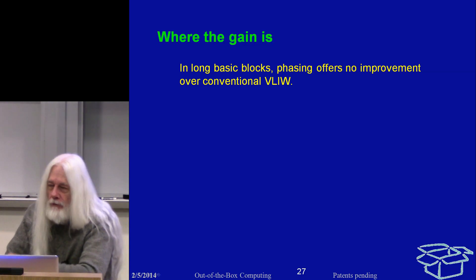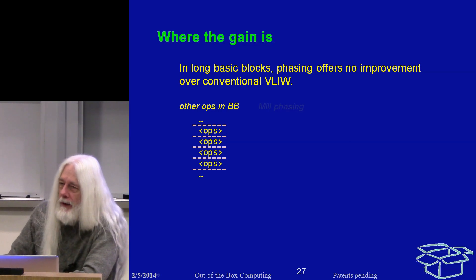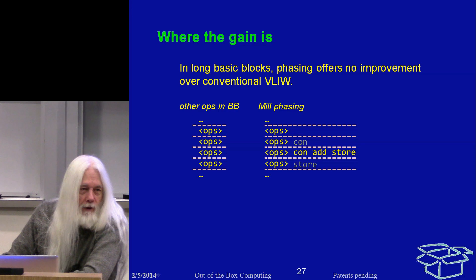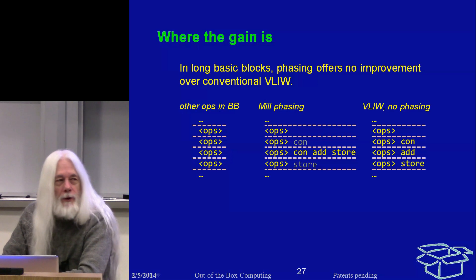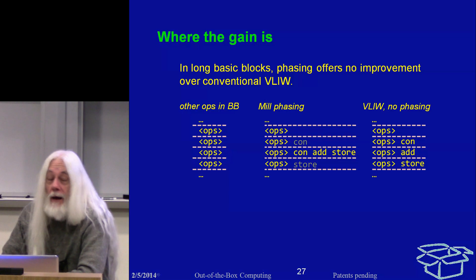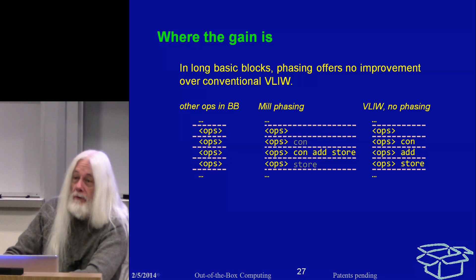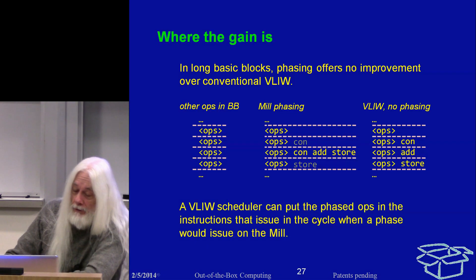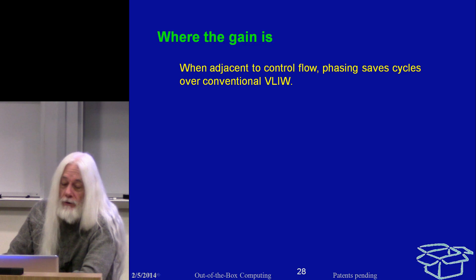Assume we're in the middle of a basic block with some number of operations. With Mill phasing, we encode it with const in reader phase and store in writer phase — still one instruction — but on a VLIW, you can simply put the const and the store in the appropriate place as well. The Mill has not gotten any faster than what the VLIW would have done. This is true only in the middle of a long basic block.